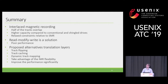In today's talk, I talked about interlaced magnetic recording, the state-of-the-art technology in hard drives — the pros and cons, the idea of overlapping tracks, and the constraint that half of the tracks cannot be overwritten in place. I discussed read-modify-write as a classical solution and showed that performance can be poor. We proposed three translation layers — track flipping, track caching, and dynamic mapping — that take advantage of IMR's flexibility and can improve performance significantly.